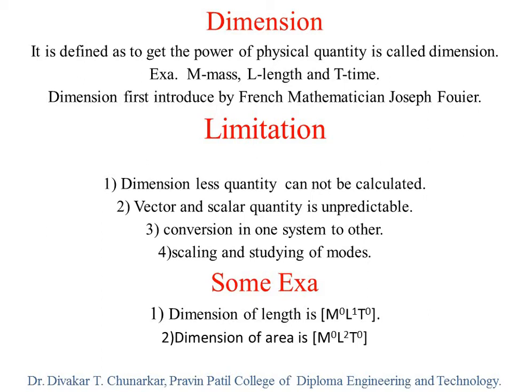What is the definition of dimension? Dimension is defined as the power of a physical quantity. We already know physical quantities — length, time, and mass are all physical quantities. We get the power for each of their symbols. For example, length to the power one, M for mass, and T for time. So dimension is defined as the power of a physical quantity.